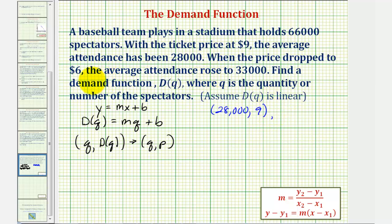And when the price is six dollars, the attendance is 33,000, which means the ordered pair would be (33000, 6). It's important that we have these in the correct order, where the first coordinate is the quantity or number of spectators, and the second coordinate would be D(q), or the price p.